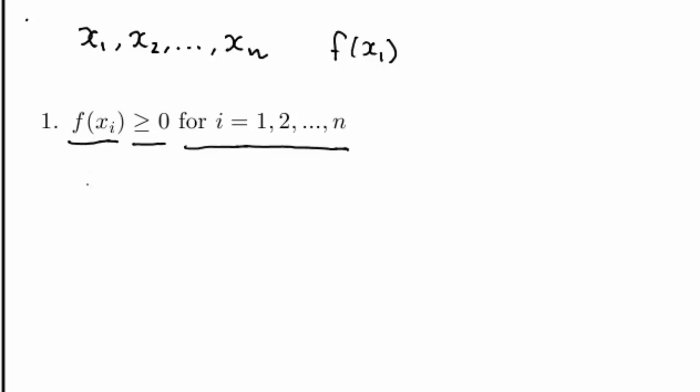It's just a more convenient way than to write that the probability of the first possible outcome should be greater than or equal to 0, the probability of the second possible outcome should be greater than or equal to 0, and so on, all the way to the final possible outcome.